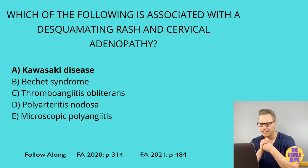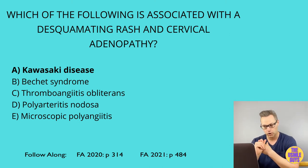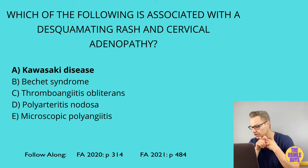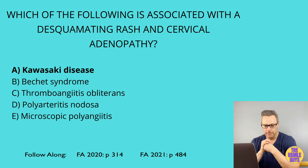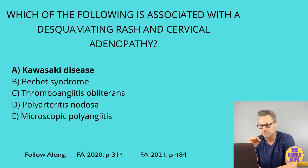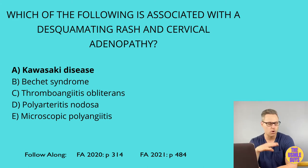Kawasaki disease is seen in Asian children, usually under four years of age. You can remember the findings with the mnemonic CRASH AND BURN ON A KAWASAKI: conjunctival injection, rash (polymorphous and desquamating), adenopathy (cervical), strawberry tongue, hand and foot changes, and fever. The worrisome complication is coronary artery aneurysms that can lead to thrombosis or rupture, which would be fatal. This is the rare instance when it's safe to give aspirin to a child — we give IVIG and aspirin. In most conditions, we avoid aspirin in children to prevent Reye syndrome.